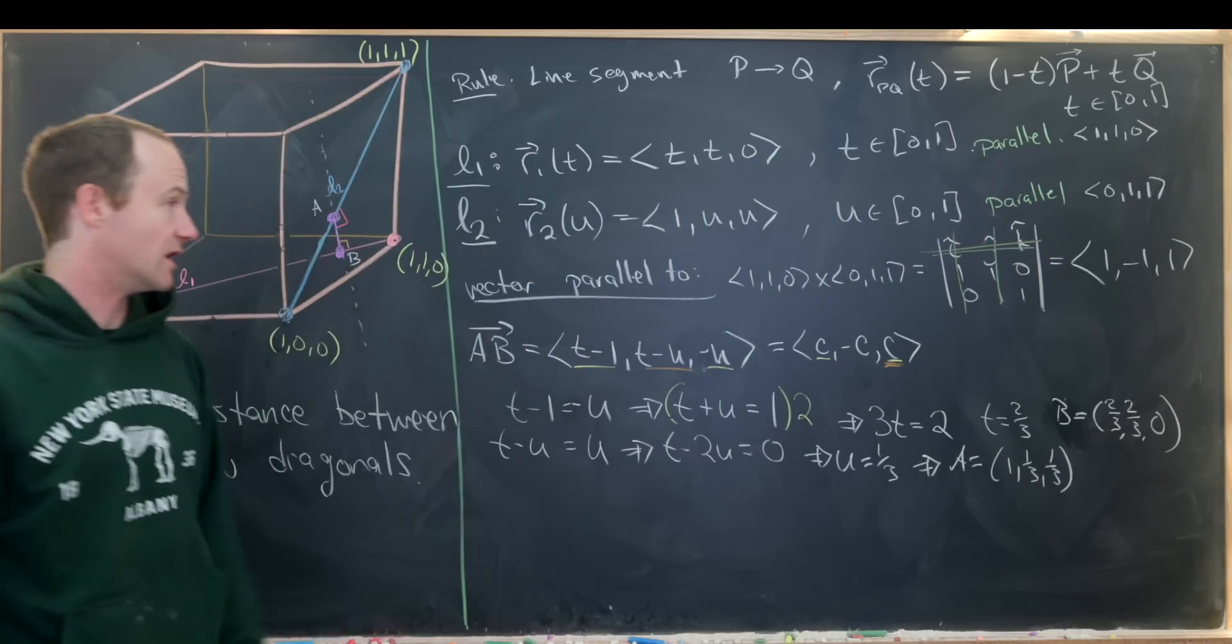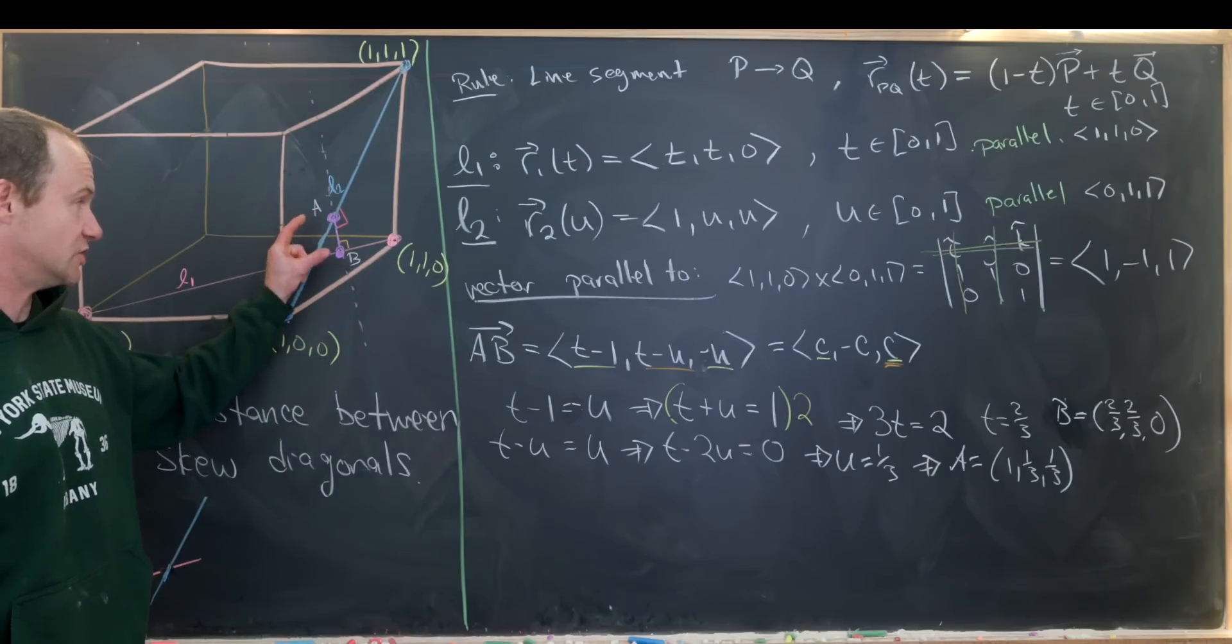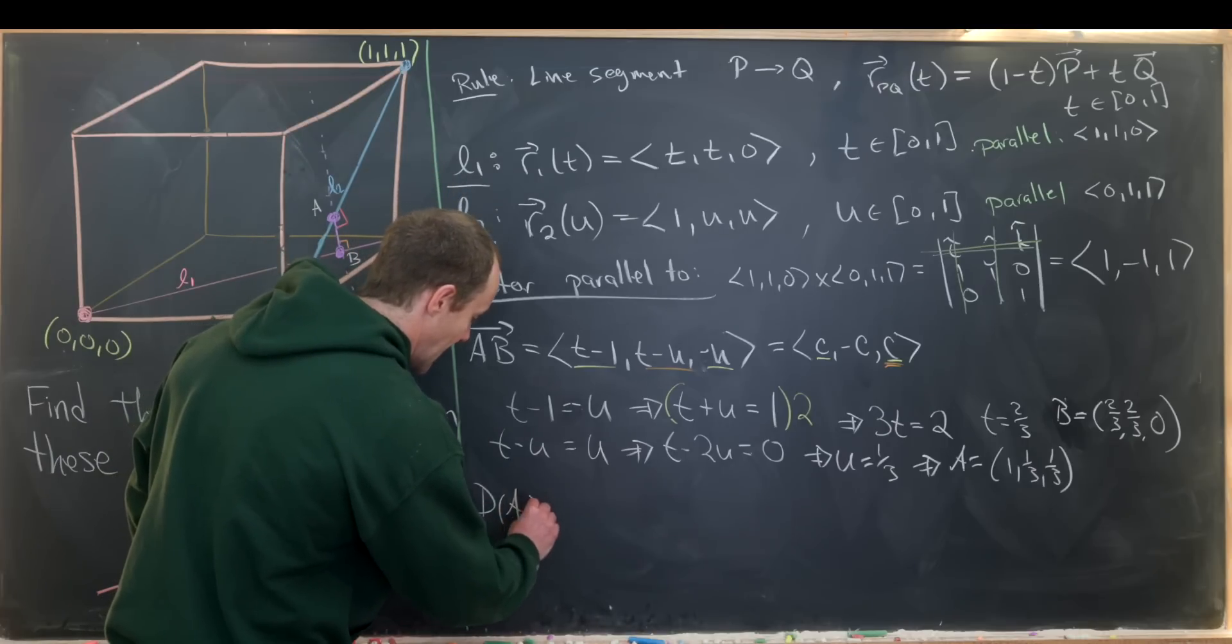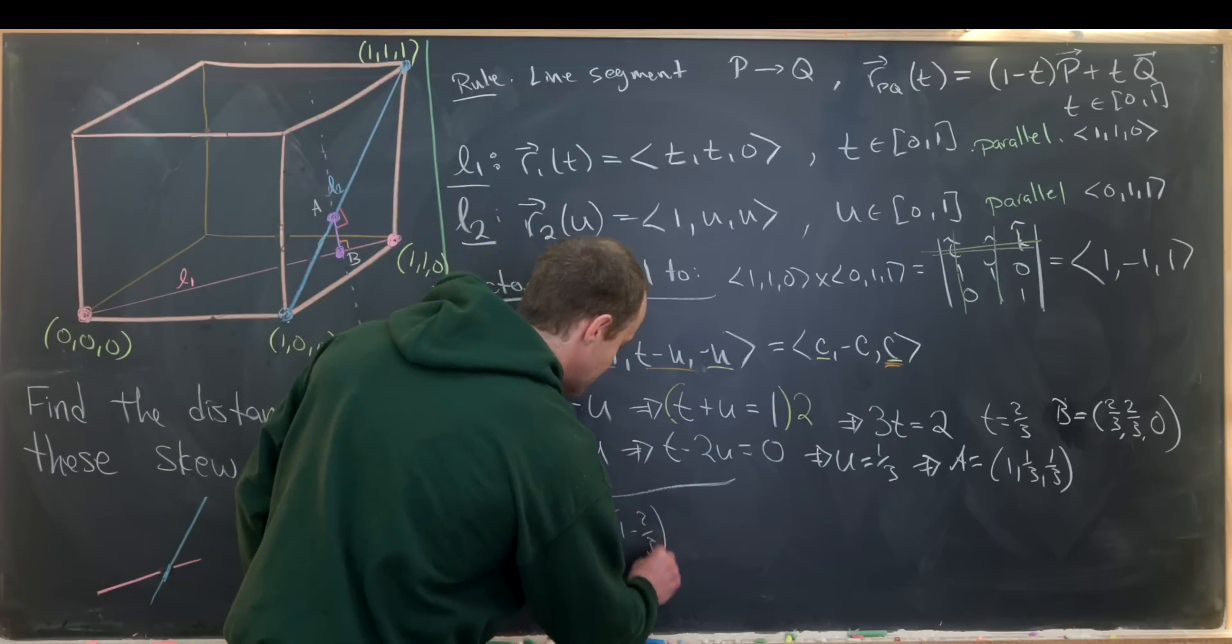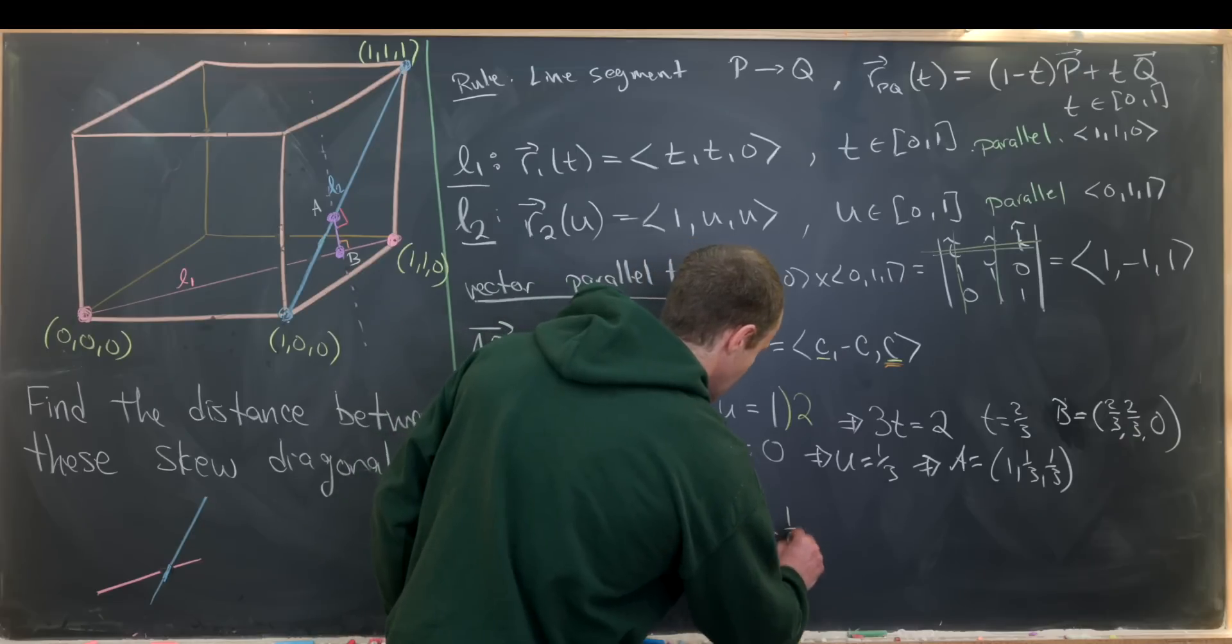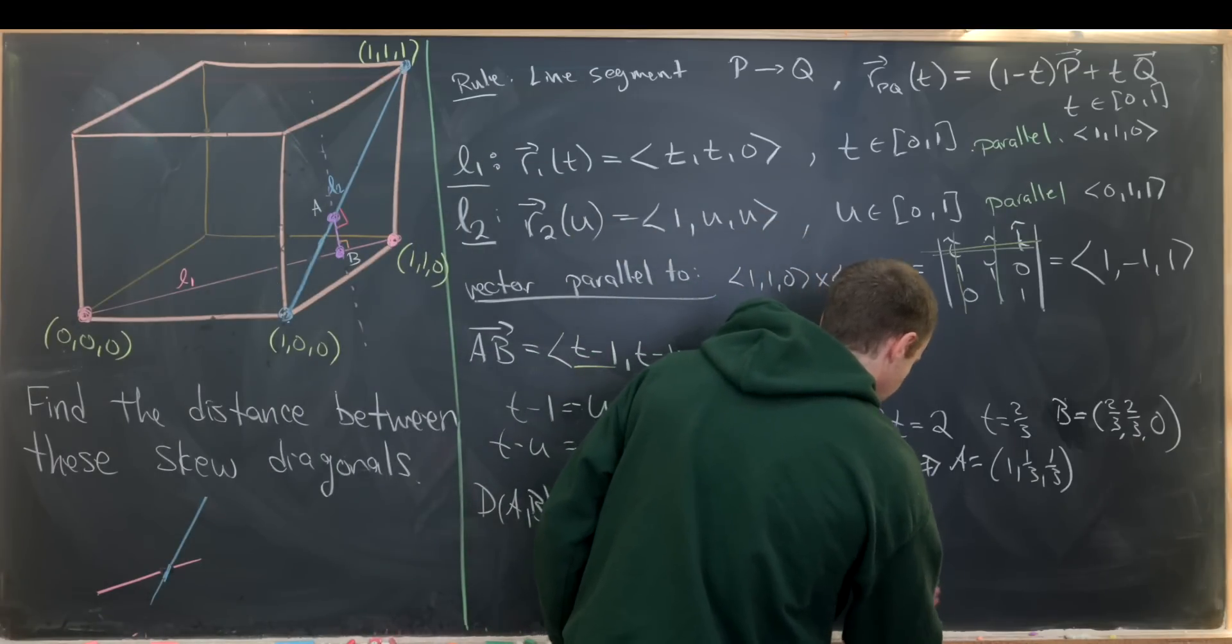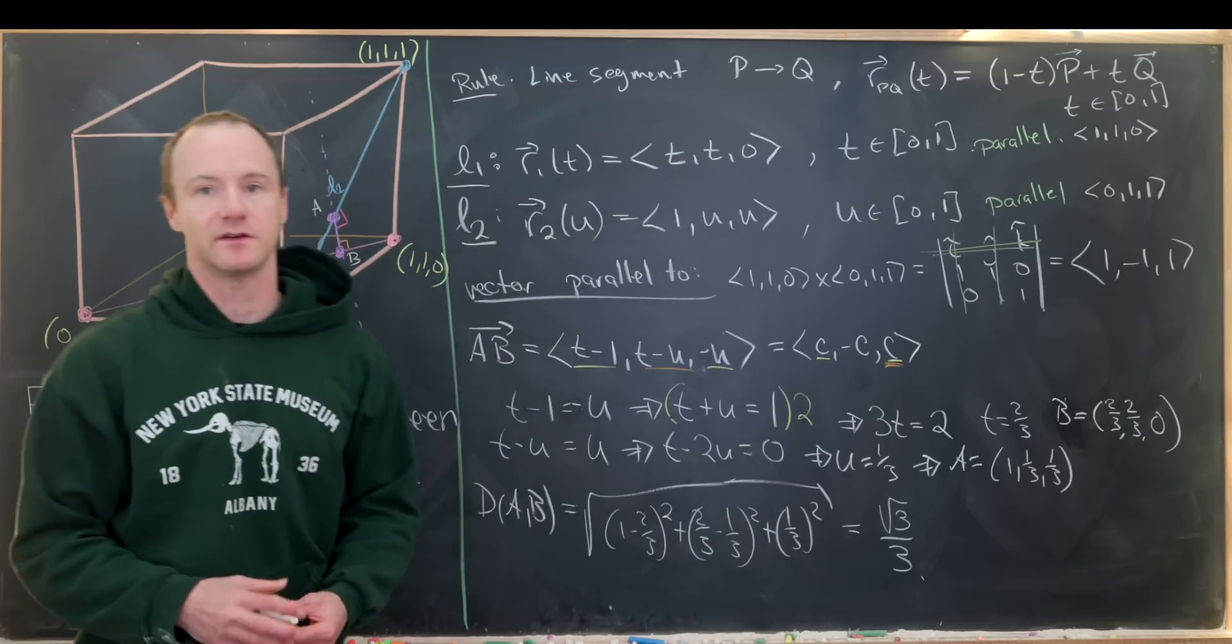But now, because we found the line segment between L1 and L2 which is perpendicular to each, that will achieve the minimum possible distance. And so that's all we need to do is find the distance from a to b using the distance formula. So that'll be the square root of one minus two thirds squared, and then plus two thirds minus one third squared plus one third squared. So that's just using the distance formula. That's a pretty easy calculation. And what we'll end up with is the square root of three over three. And that's our final answer. So that's the distance between these two skew diagonals. And that's a good place to stop.